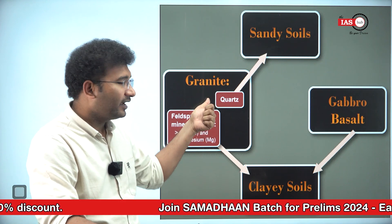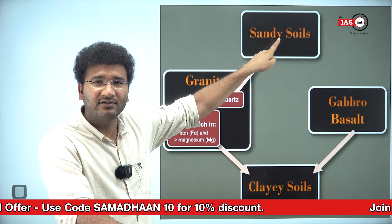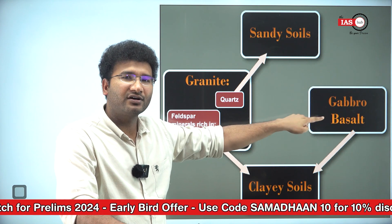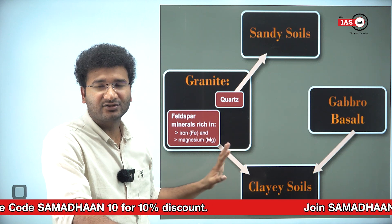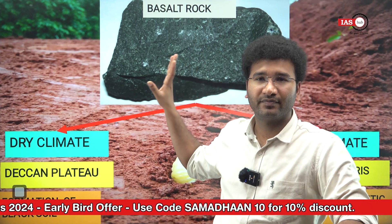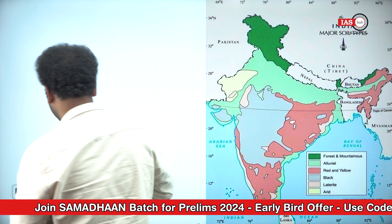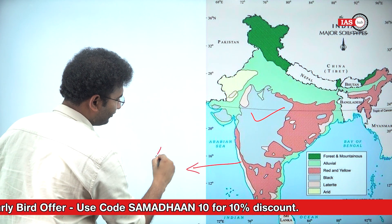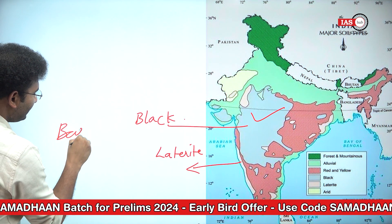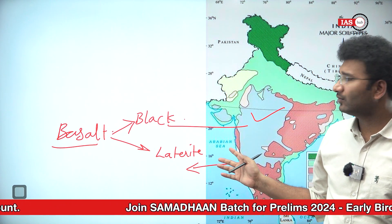For example, let's take basaltic rock. Basaltic rock is considered to be an igneous rock. The same basaltic rock will help form black soil, and it will also help in the formation of laterite soil. So both black soil and laterite soil come from basalt. Though there is a color difference — one is black in nature and the other is reddish-brown — the parent rock is basalt.